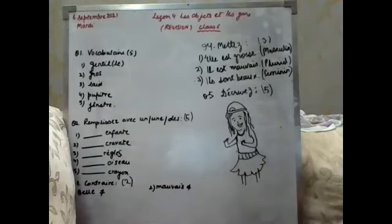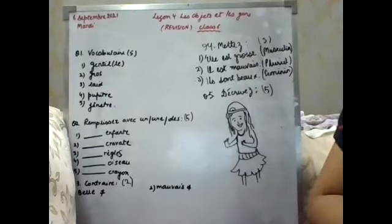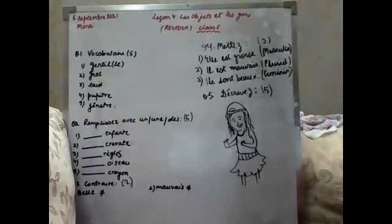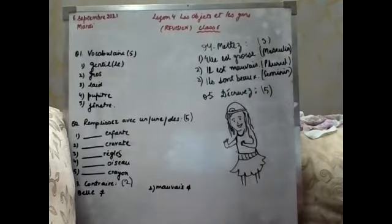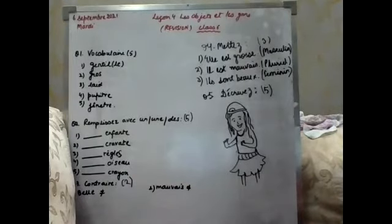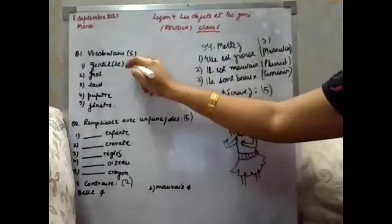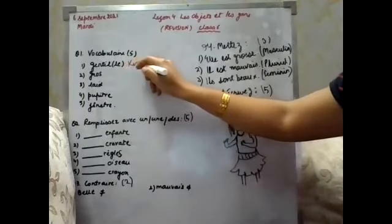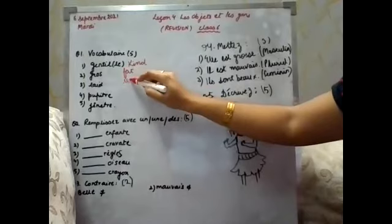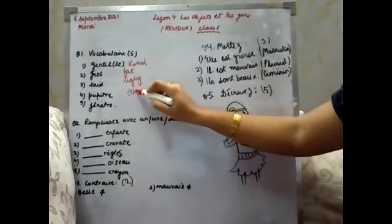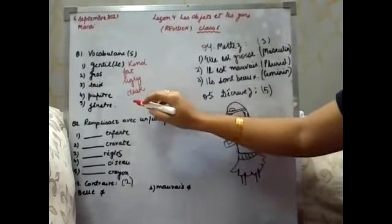This is very easy, do it fast, then we will discuss the answers. Question 1, vocabulary: please check the answers with a different color pen so you know your mistakes. What do you mean by gentil? Gentil is kind. Gros is fat. Laid is ugly. Pupitre is desk and fenêtre is window.